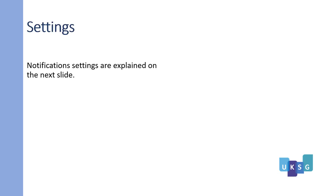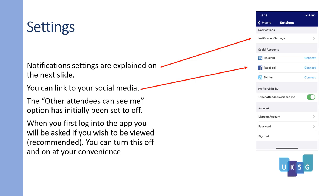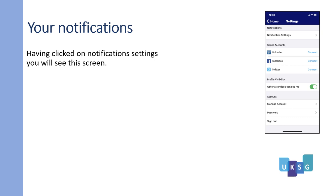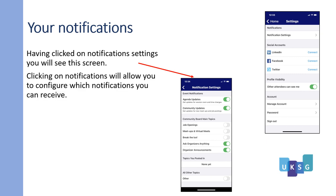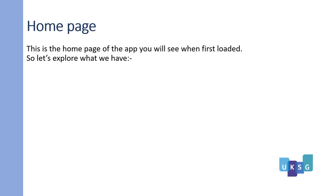Your settings. Notification settings are explained in more detail on the next slide. You can link to your social media. The 'other attendees can see me' option has been initially set off. When you first log into the app, you will be asked if you wish to be viewed — we recommend you do this. You can turn this off and on at your convenience. Having clicked on notification settings, you will see a screen where clicking on notifications will allow you to configure which notifications you receive. We recommend you set those that are shown.